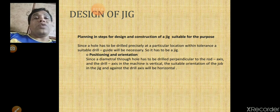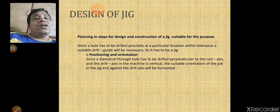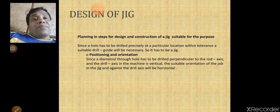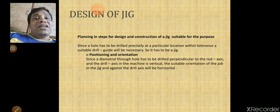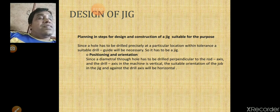Now we will start solving the problem. First step is positioning and orientation. Since the job is cylindrical and the hole is perpendicular to the cylinder axis, we are going to place the job horizontally on a V block. The drill axis is also perpendicular, so we place the job in a horizontal orientation. A V block is used for holding and positioning the cylindrical job.